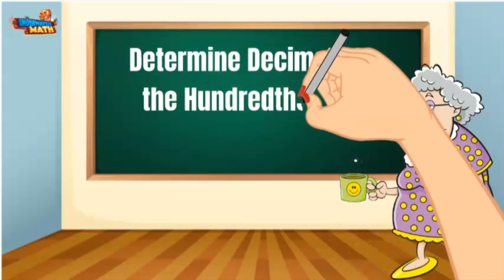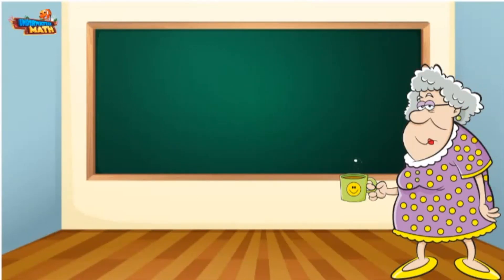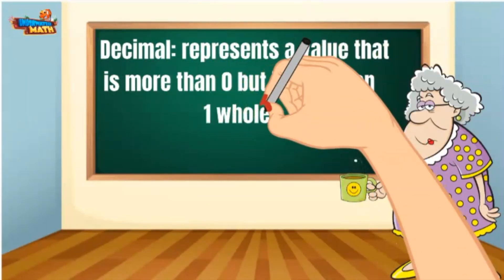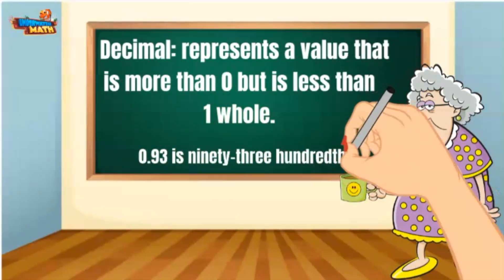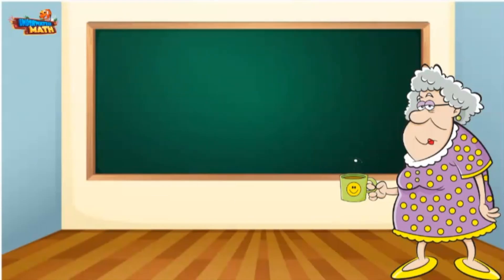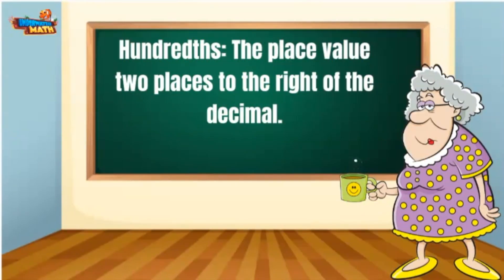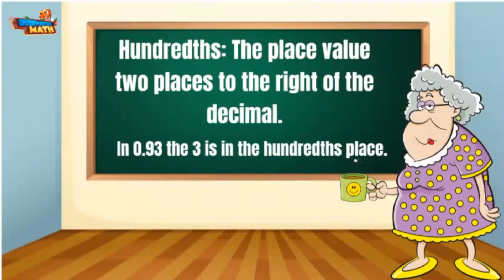Today we will determine decimals to the hundredths on a number line. I'm sure you need me to tell you what a decimal is. A decimal represents a value that is more than zero but is less than one whole. Here's an example: 0.93 is read as 93 hundredths. Oh, and speaking of hundreds, that is the place value two places to the right of the decimal. In 93 hundredths, the three is in the hundredths place. Now let's get to moving or we're gonna be here all day, and I don't have time for all that.